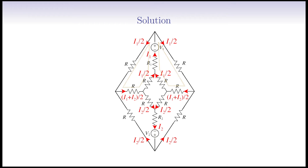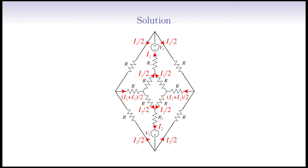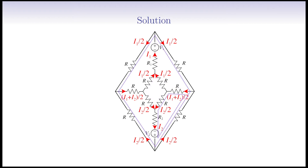For example, these two loops give the same equation, so we cannot utilize them to find two independent unknown variables. Similarly, this pair of loops, and also this pair of loops, do not give a set of two independent equations. On the other hand, we can use this pair of loops since they give two independent equations for I1 and I2. In addition, this pair, as well as this pair, or even this pair of loops work too.